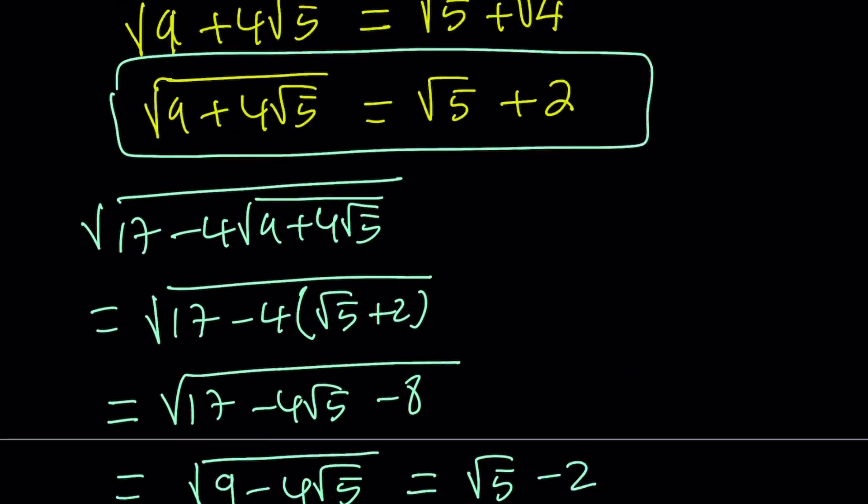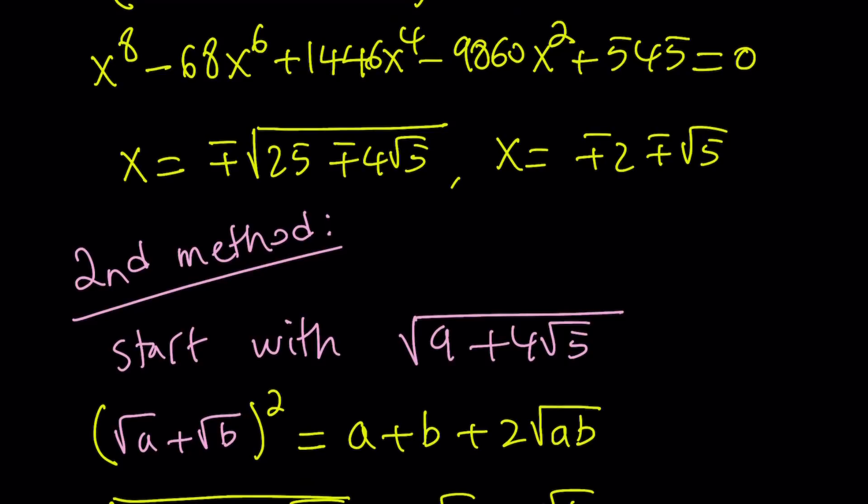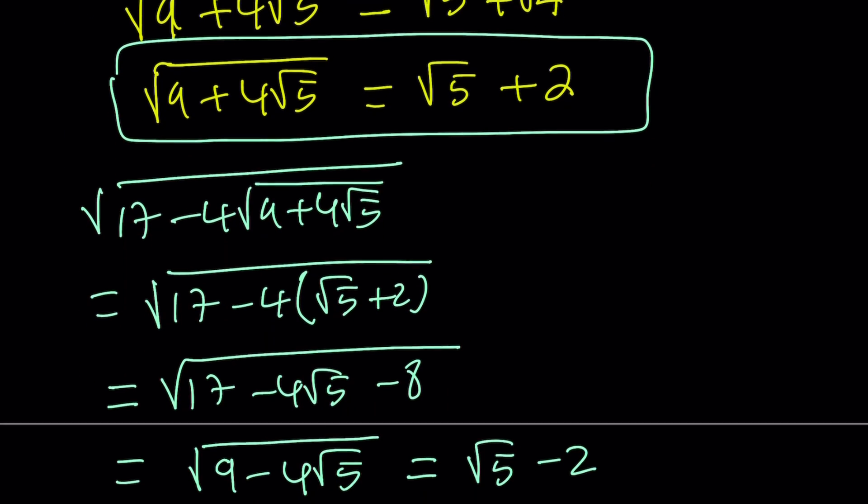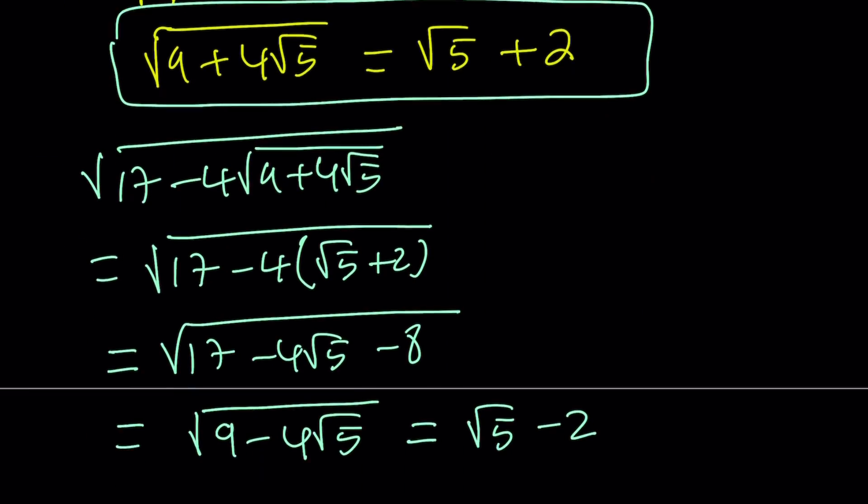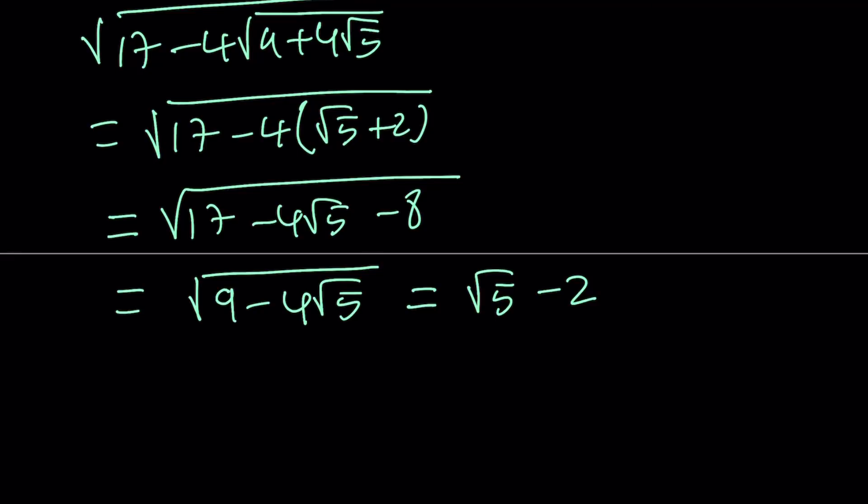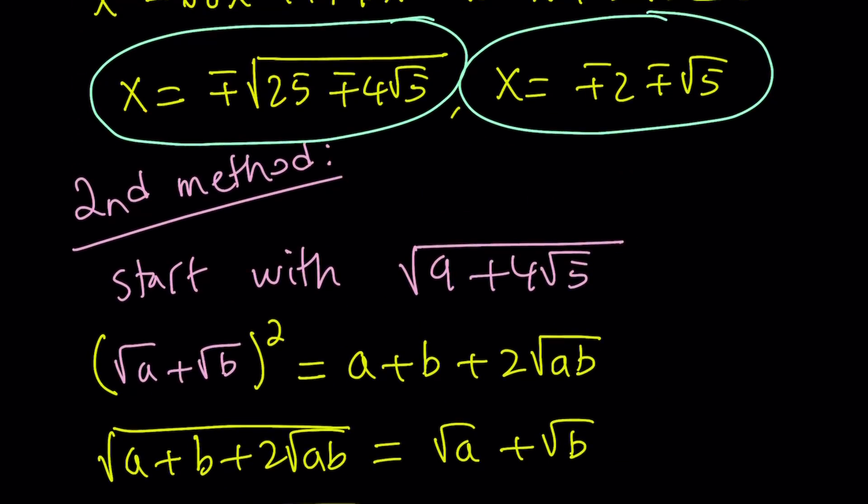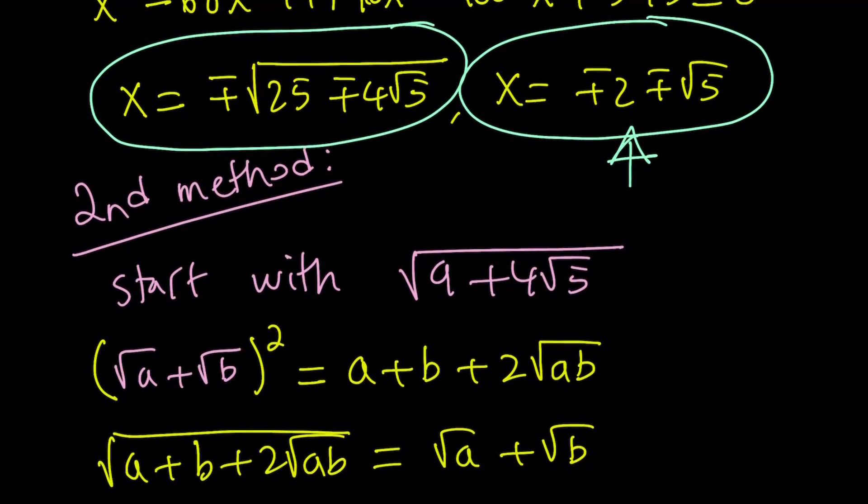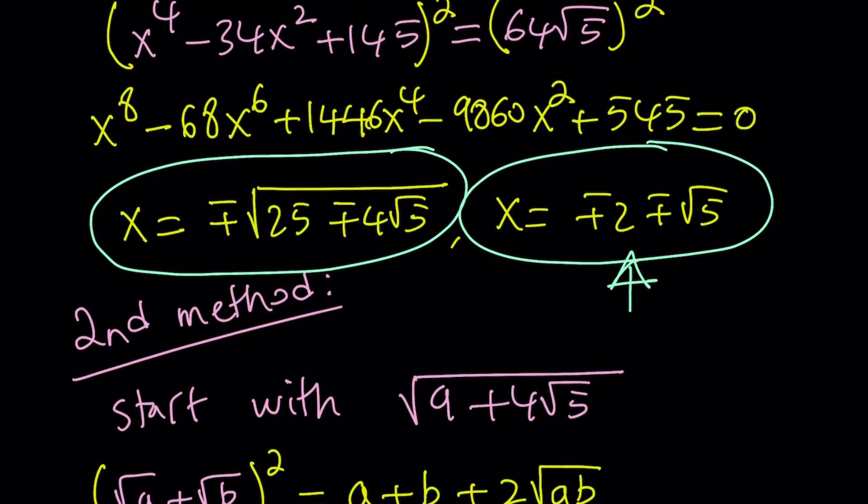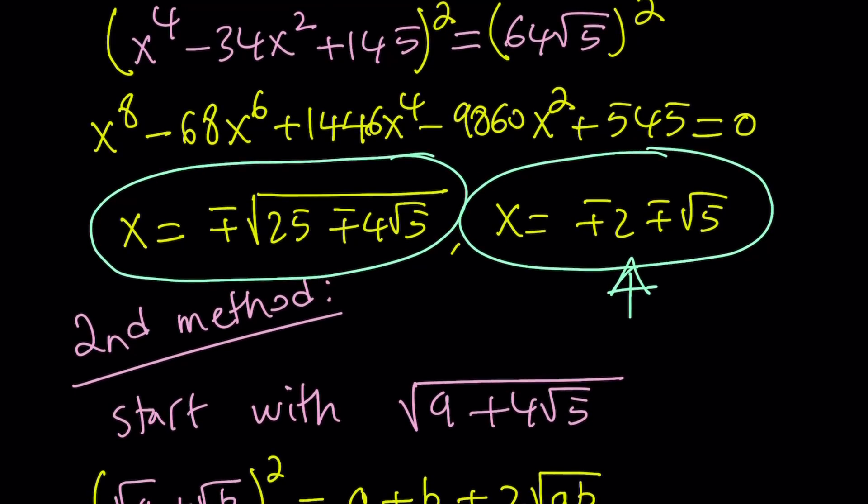If you go back to the first method and look at the roots that we found, notice that we got these four roots and we got these four roots. And, the only solution that works from here is going to be square root of 5 minus 2, which is one of these solutions. So, out of the eight roots that we got, because there's a lot of extraneous solutions here that we introduced, because we kept squaring both sides.